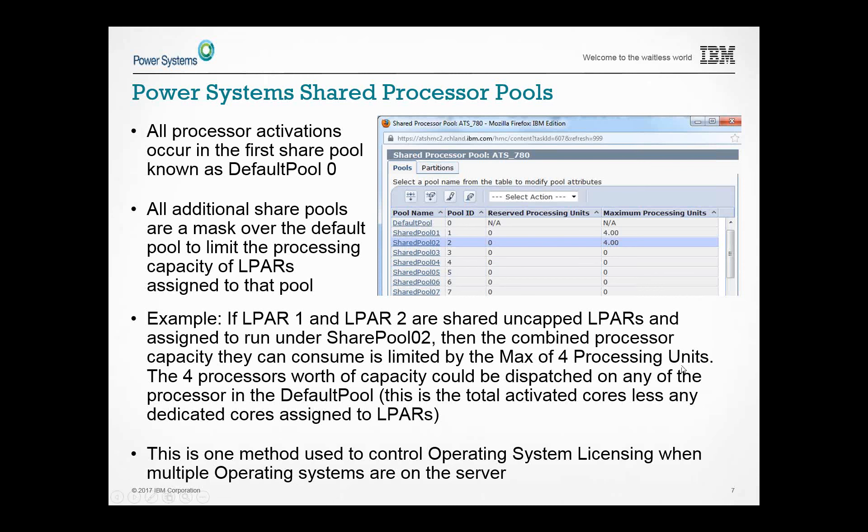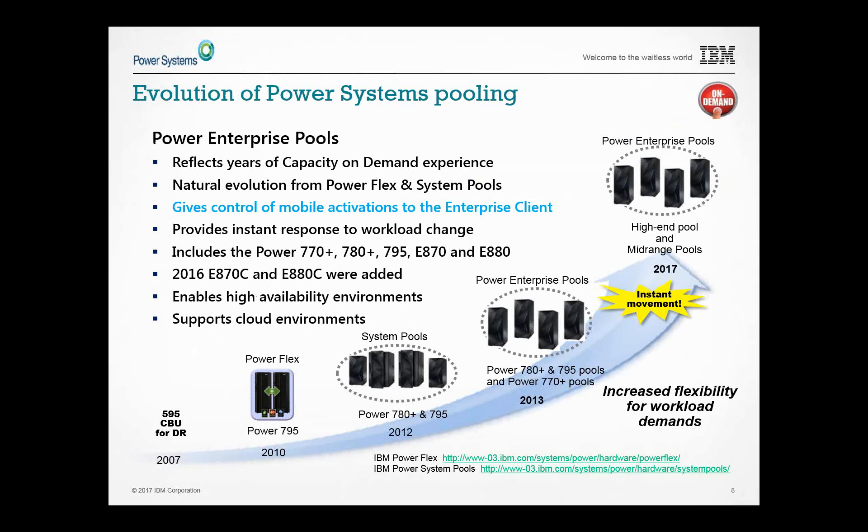This chart shows the evolution of how we got to where we are today. It started with CBU-type capacity backup systems — a lower cost solution for high availability. Then with Power 7 795, we introduced PowerFlex: the ability to buy two systems and share processors between them, with terms and conditions on how often you could do mobile activations. Then in 2012 we went from PowerFlex to system pools, and then to enterprise pools.